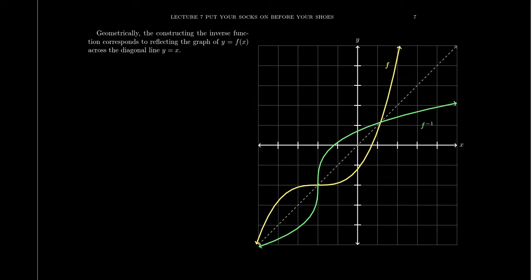If you have a one-to-one function, it will have an inverse function, which you can see illustrated in green. These two functions, f and f inverse, will satisfy an interesting symmetry property. If you take the line y equals x — the dashed diagonal line shown here — the function and its inverse will be mirror images of each other, exact reflections across this line.